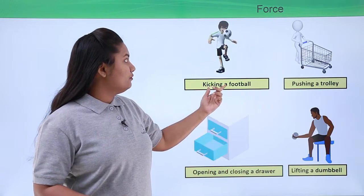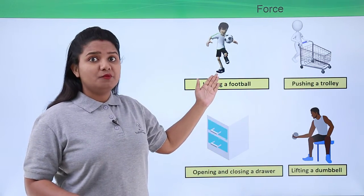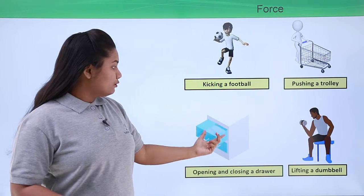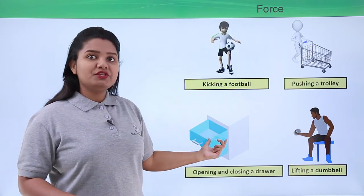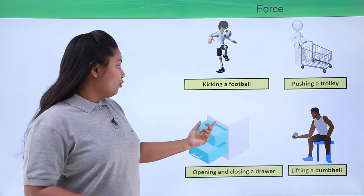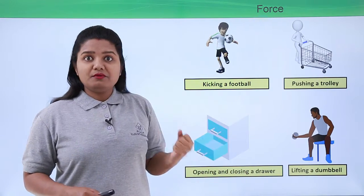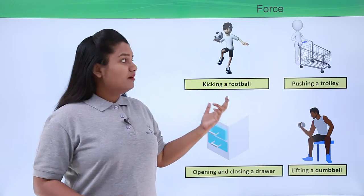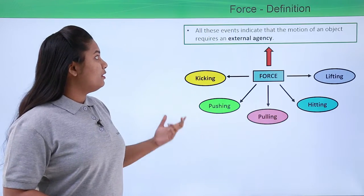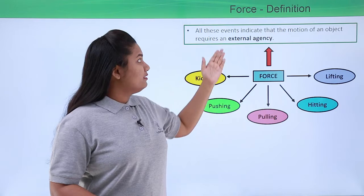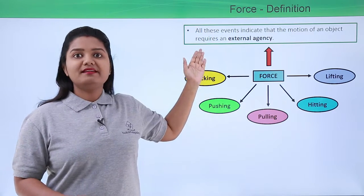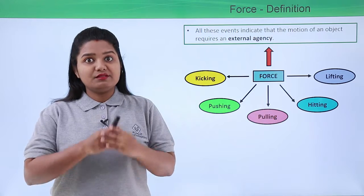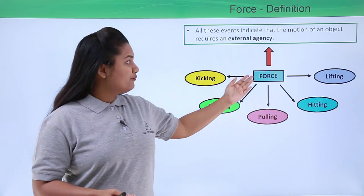For example, when we kick a football the football starts moving. When we push the trolley it starts moving, and we close and open the door by pushing or pulling. In all these examples, what we came to know is that the motion of an object requires an external agency, and that external agency is what we call force.